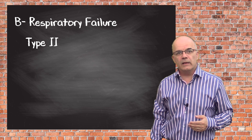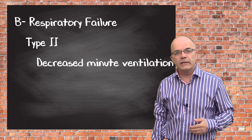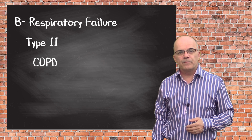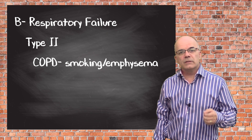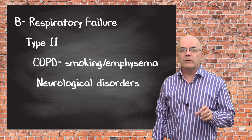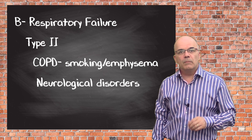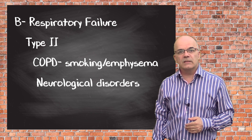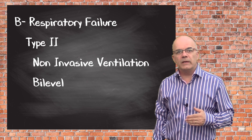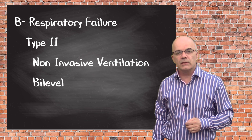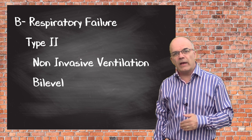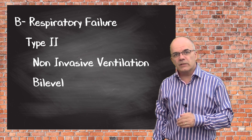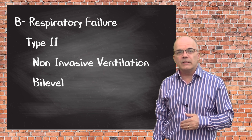A type 2 respiratory failure, which is a result of decreased ventilation and increased dead space ventilation, is most commonly caused by chronic obstructive airways disease, usually as a result of cigarette smoking resulting in emphysema. It can also be caused by neurological disorders causing hypoventilation, muscle failures such as muscular dystrophies, or neuromuscular transmission failure such as myasthenia gravis. Type 2 failure is now more commonly managed with non-invasive bi-level ventilation in the initial stages, which will often reverse the worsening hypercapnia and avoid the need for invasive mechanical ventilation.